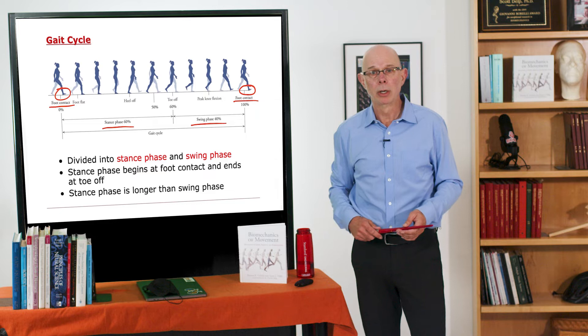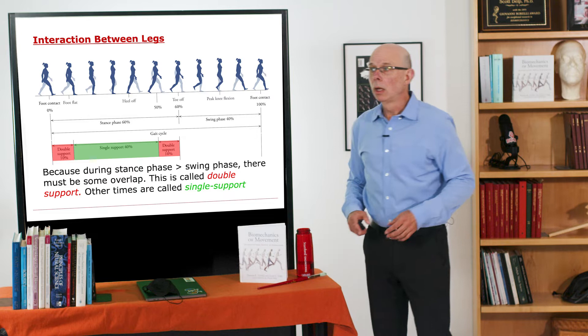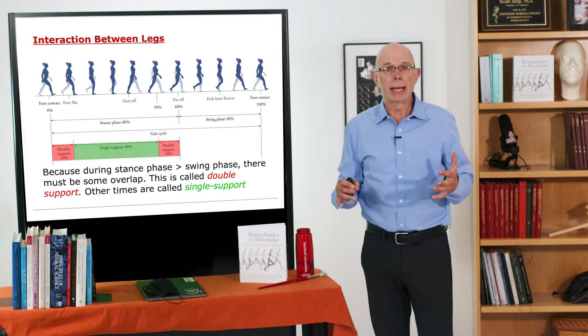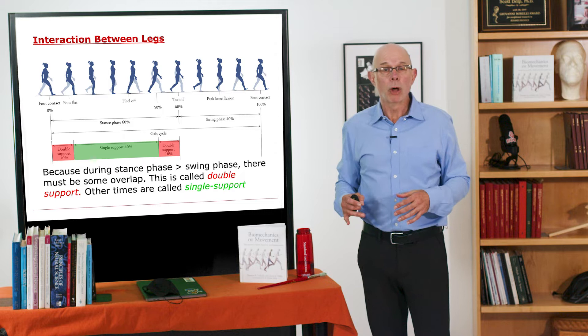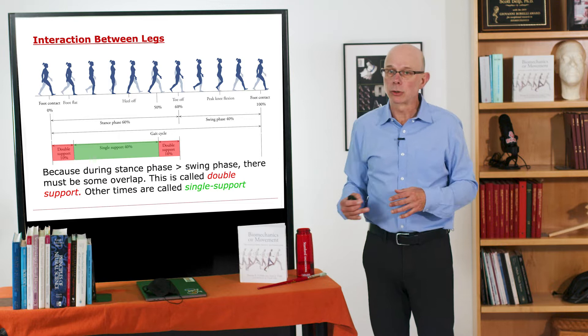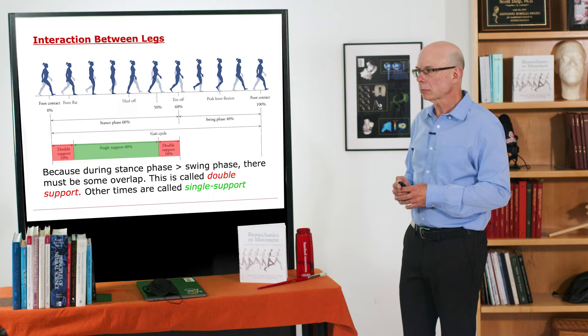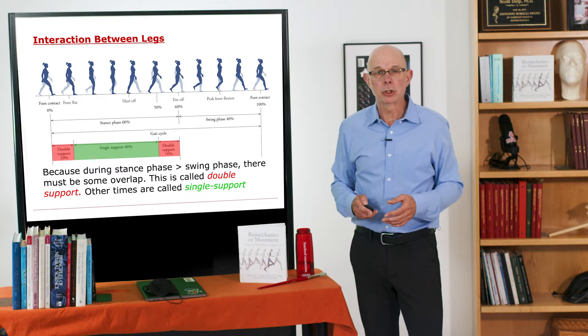During double support, there's an interaction between the legs where the rear limb is supporting body weight and propelling you forward, while the front leg is supporting body weight and modulating your speed — producing some negative ground reaction force. This interaction between the legs is critical for the energy efficiency of walking, and we'll see how that comes up in the dynamic model of walking in just a few minutes.